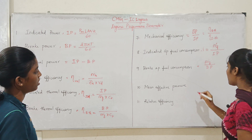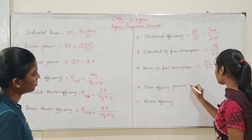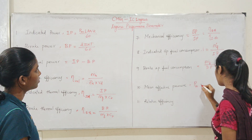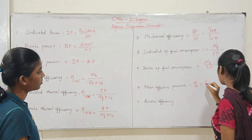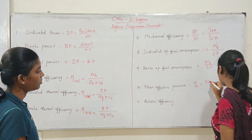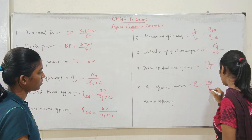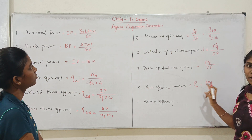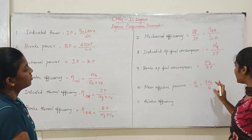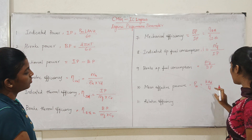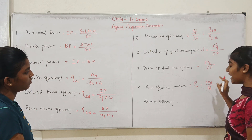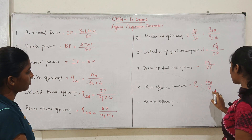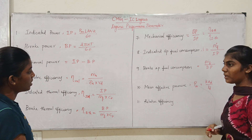Mean Effective Pressure. Mean effective pressure is equal to k into A_D divided by L_D, where k is the spring constant, A_D is the area of the indicator diagram, and L_D is the length of the indicator diagram.